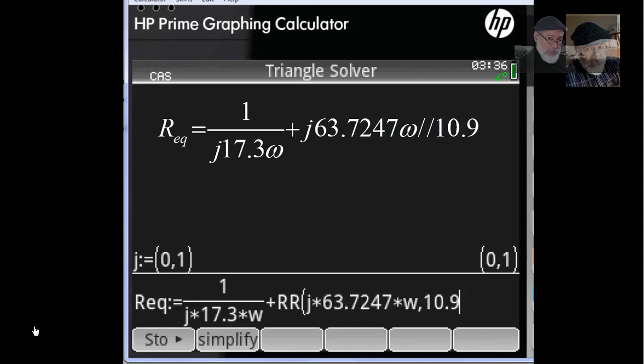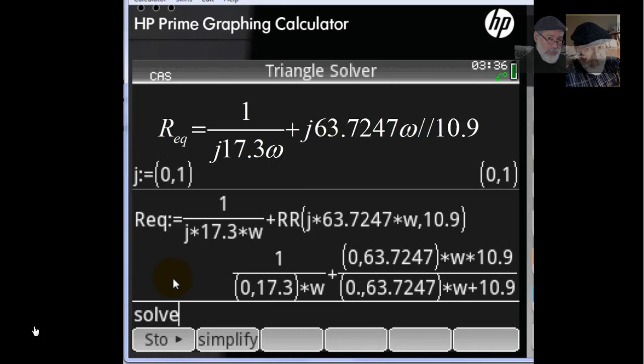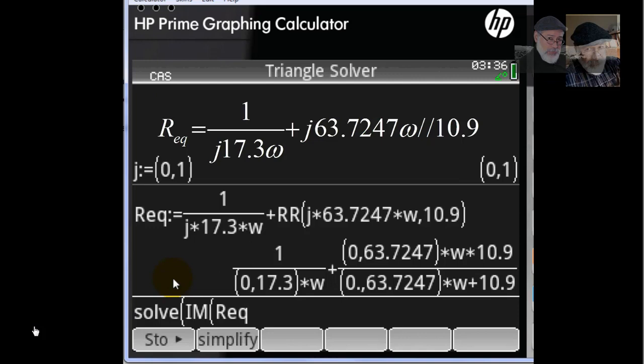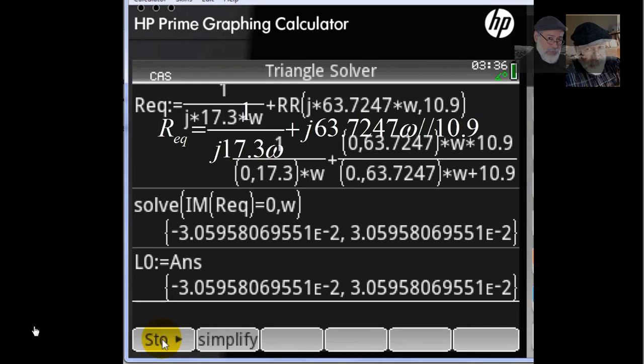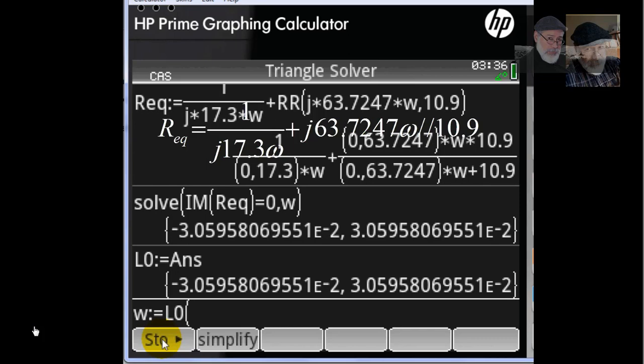Now, solve the equation. The imaginary part of Req is 0. What should be the value of omega for that? Enter. I get two answers, but I have to use only the positive value because the exercise says so: 3.05958 times 10 to the negative 2. Let me assign that to a list variable L0 so that I can assign to omega the second value of the list L0, which is the positive value. 3.05958 times 10 to the negative 2. That is the answer.